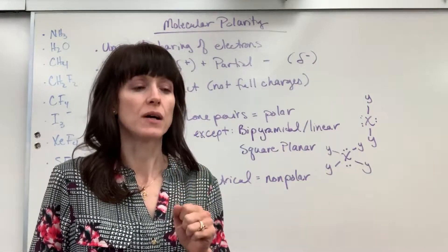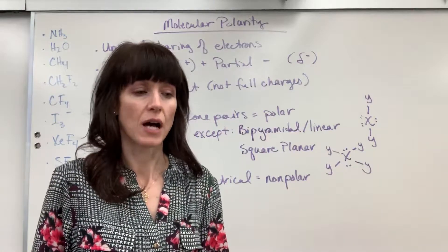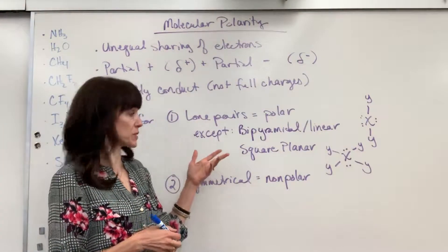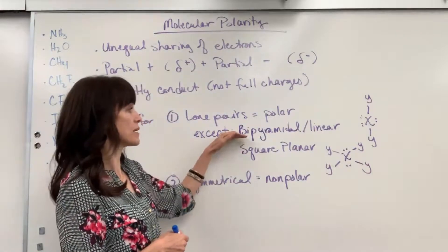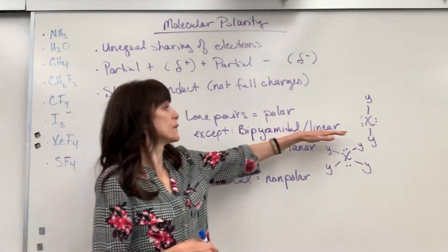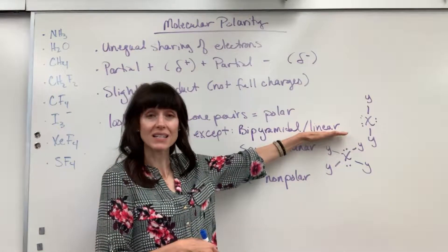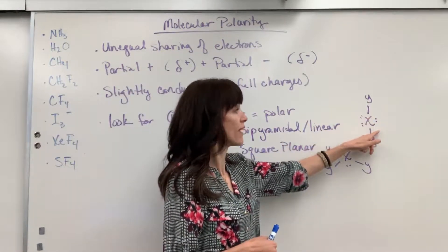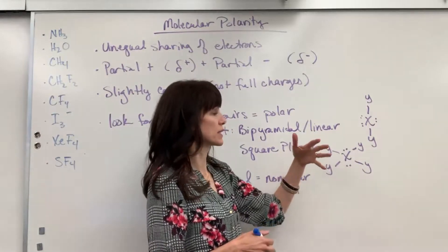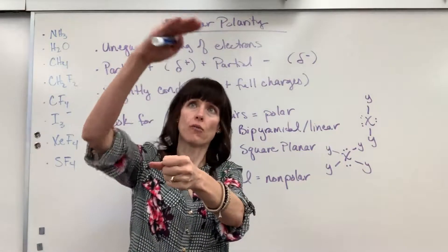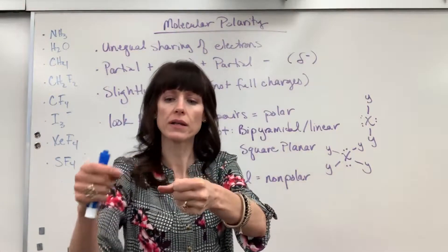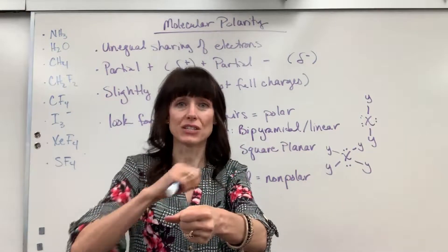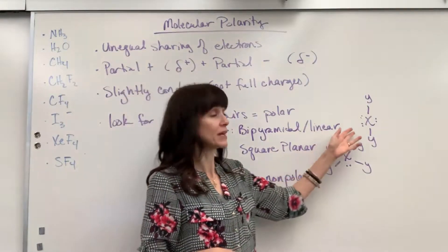Now there are two exceptions to this lone pair rule, based on your VSEPR chart. First exception: in the five electron domain — trigonal bipyramidal electron geometry — the molecular geometry linear is going to be non-polar even though it has lone pairs. Picture the central atom X with a Y up top and a Y on the bottom, and then in a triangular pattern, three lone pair electron domains. Those three electron domains cancel each other out for polarity, so overall this is a non-polar molecule.